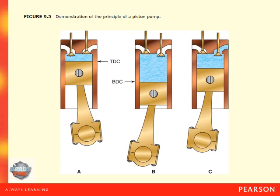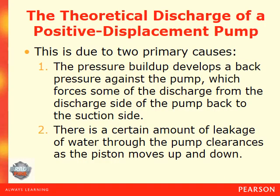Here is a demonstration of the principle of the piston pump. The theoretical discharge is never achieved due to two primary causes: first, pressure buildup develops back pressure against the pump, which forces some discharge from the discharge side back to the suction side. Second, there is also a certain amount of leakage of water through the pump clearance as the piston moves up and down.